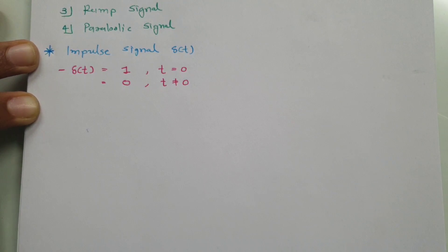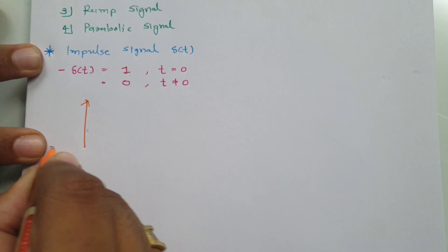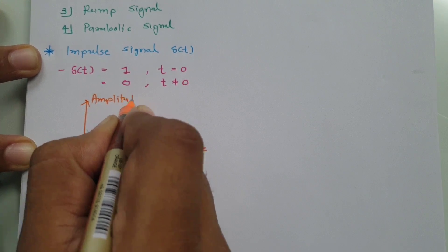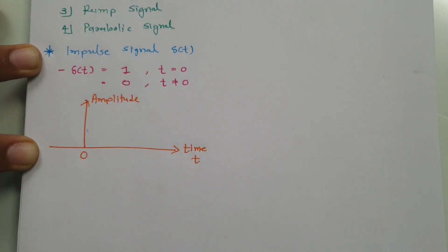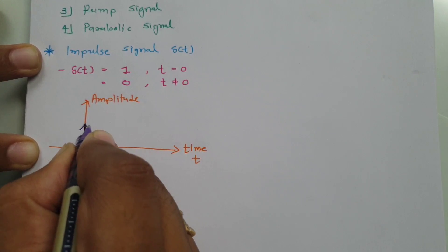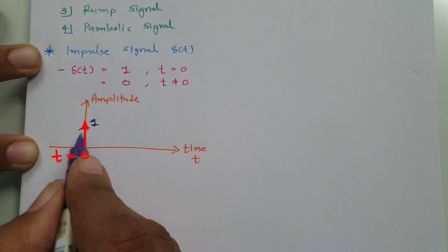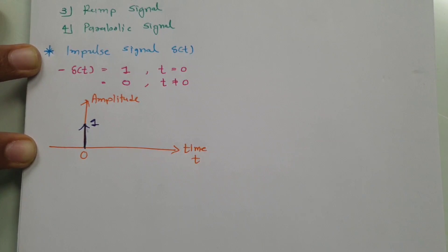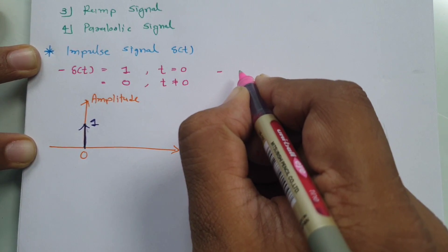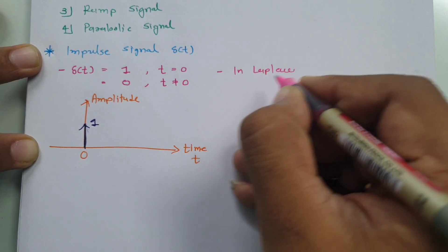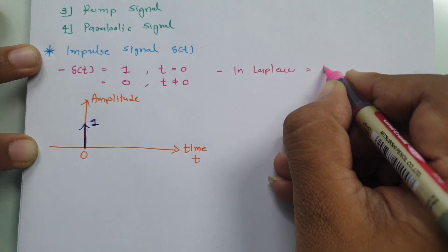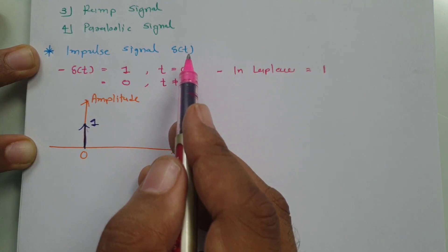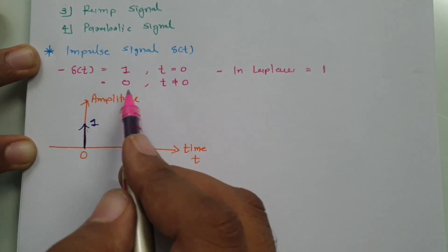Let us understand this by graphical representation. On the horizontal axis we have time, and on the vertical axis we have amplitude. At t equals 0, the amplitude is 1. When t is not equal to 0, the amplitude is not there. That is how the impulse signal looks. In the Laplace domain, the impulse signal δ(t) equals 1.